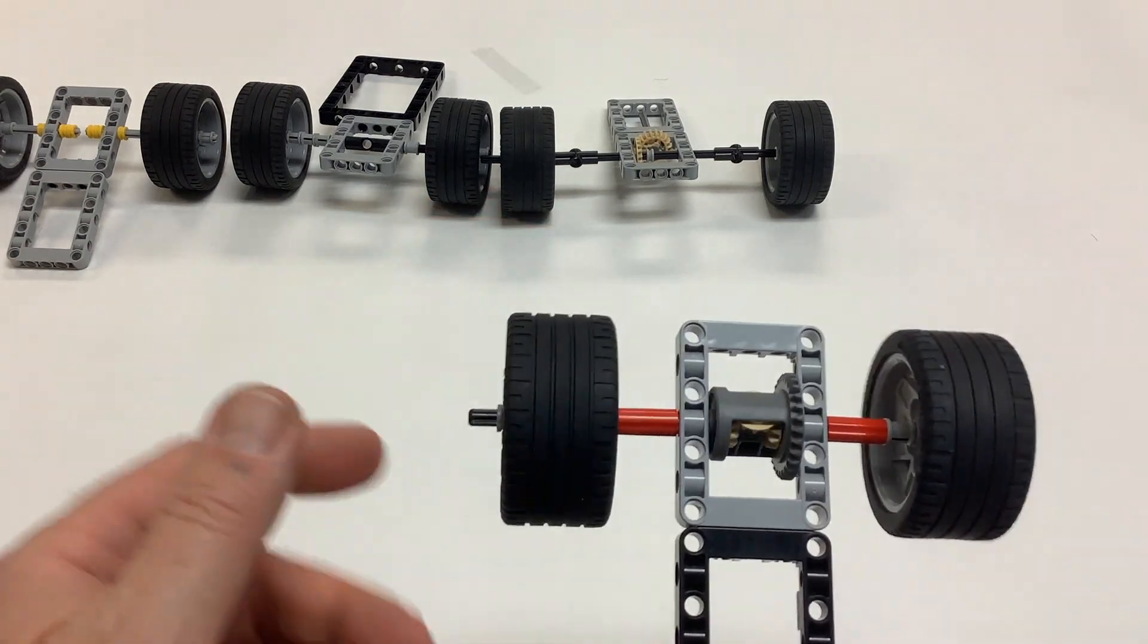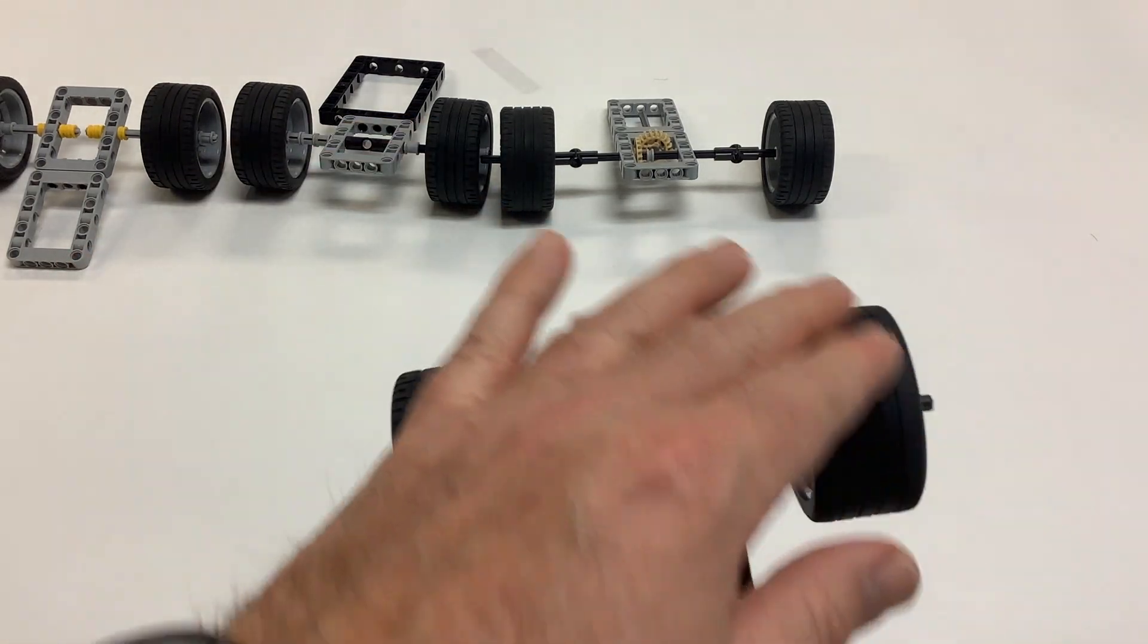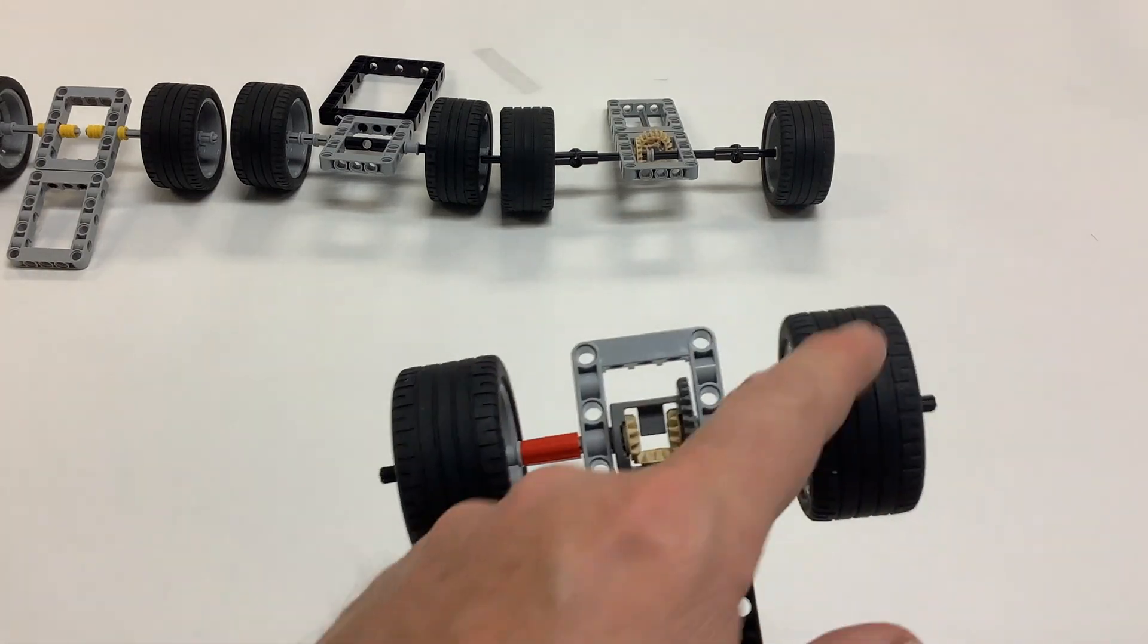So the way that a differential works is it allows each wheel, they are connected, but they spin freely here.